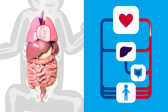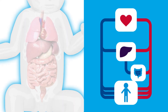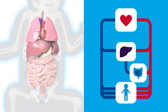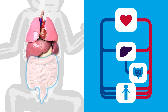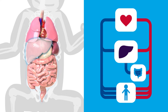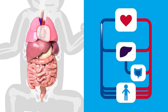After our hearts pump out blood, it flows to every organ and tissue in our bodies, including the intestines and the liver, before returning again to the heart.